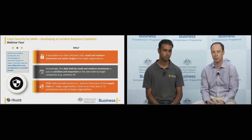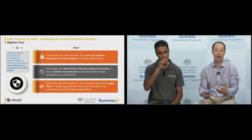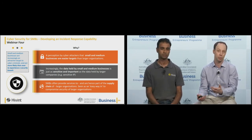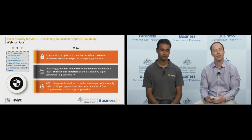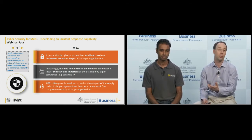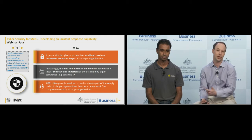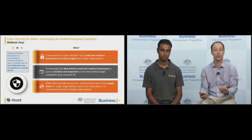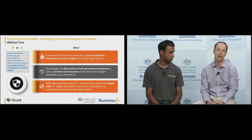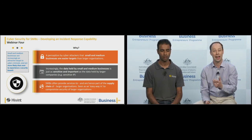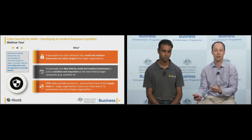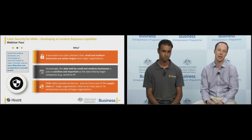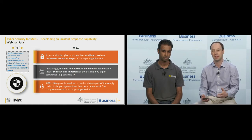A third reason SMEs can be targeted is that they can be seen as a key attack path to getting to larger businesses. For example, Netflix was blackmailed by a hacker who stole Orange is the New Black, which was largely attributed to the compromise of a production company. Similarly, the major Target breach — which resulted in the loss of hundreds of millions of credit card numbers — was traced back to a breach of a heating and ventilation maintenance company that was itself a medium-sized business.